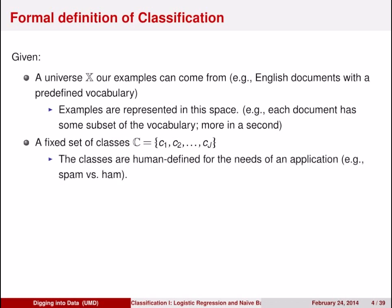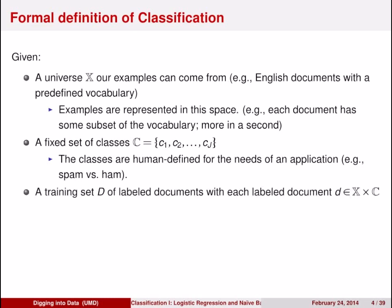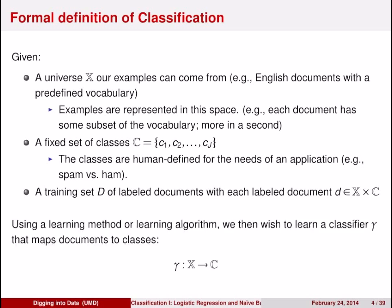Following literature, we'll call non-spam documents HAM. Typically, the way that these algorithms are learned is that you start with some training set of documents, with each document coming from the universe and being labeled with one of the classes. The goal is to produce some algorithm that can map examples from x into the set of classes. We will call this classifier gamma.